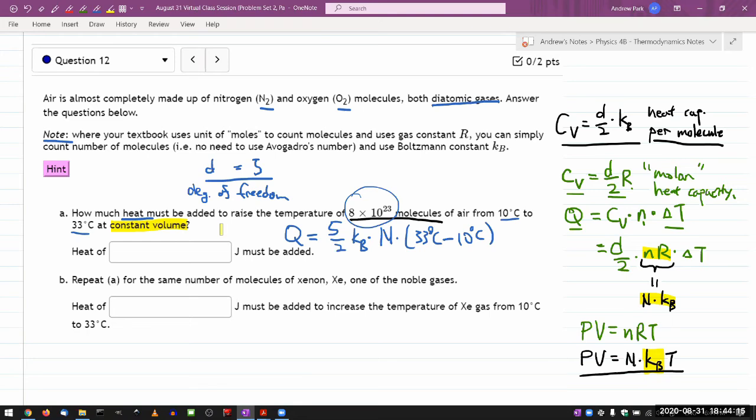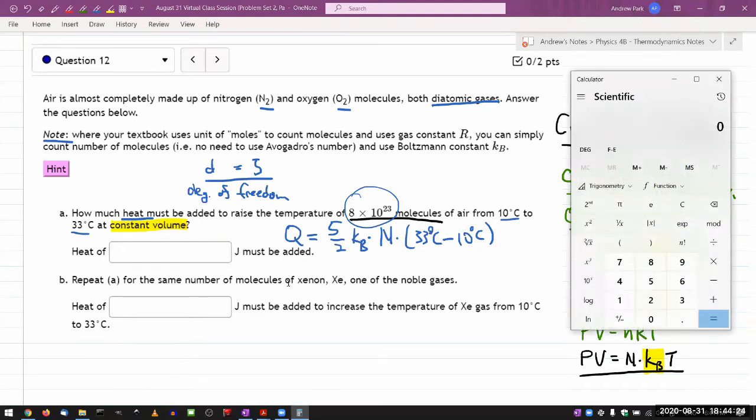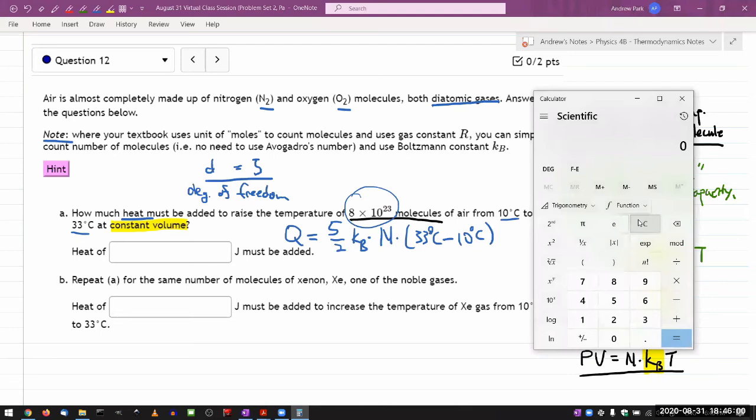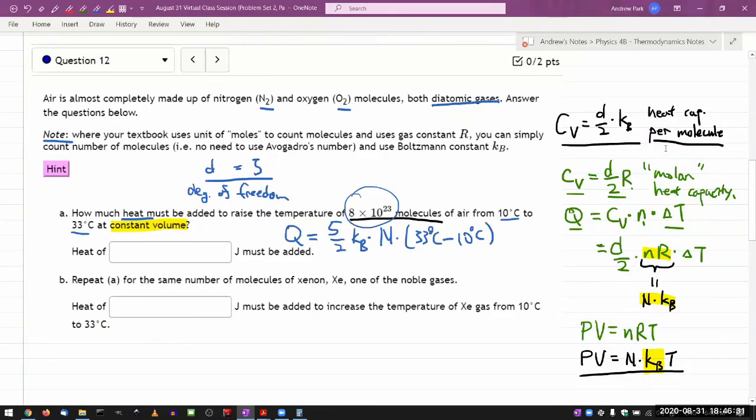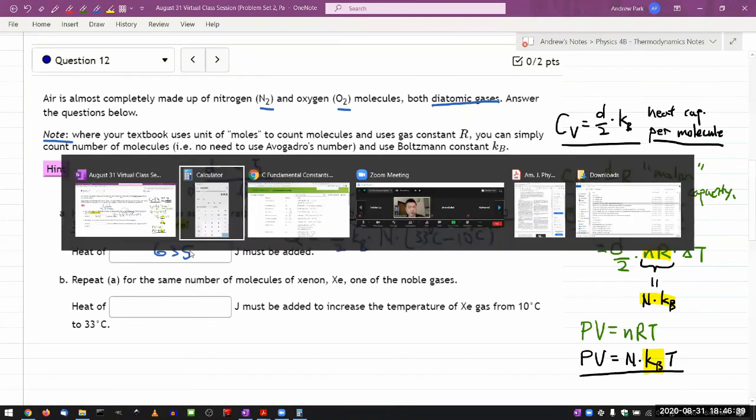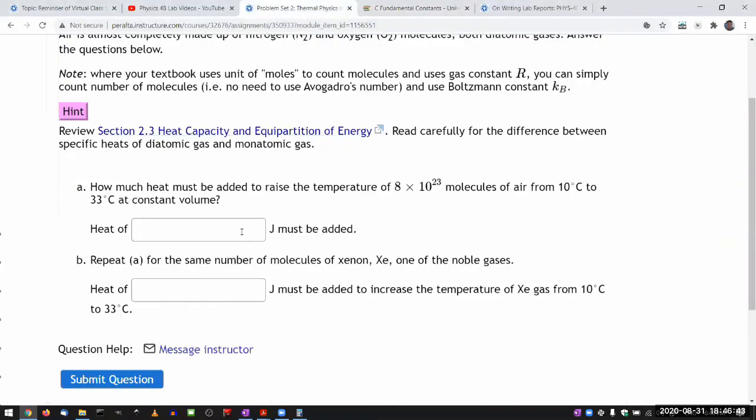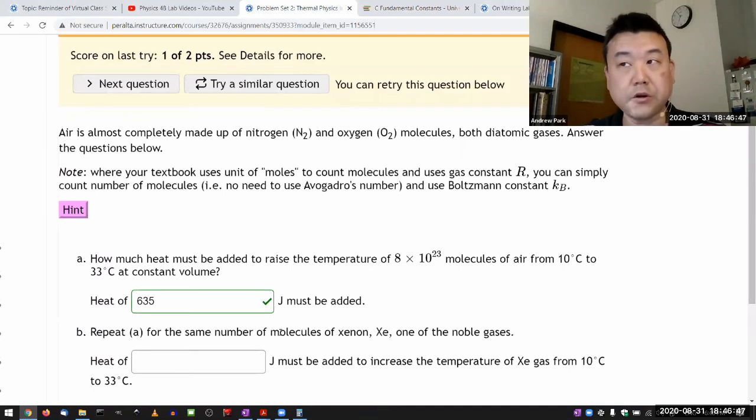So that's the expression you should be using. And since there were more unusual number of people asking, let me just plug in the numbers to make sure I did this correctly. 5 over 2 KB times number of molecules, 8 times 10 to the power of 23 times, now let me plug in Boltzmann's constant, 1.38 times 10 to the power of minus 23, equals 635 joules. Let me write that down here. Heat of 635 joules must be added. And let me just plug in to double check that it gets graded as correct. 635. Good.